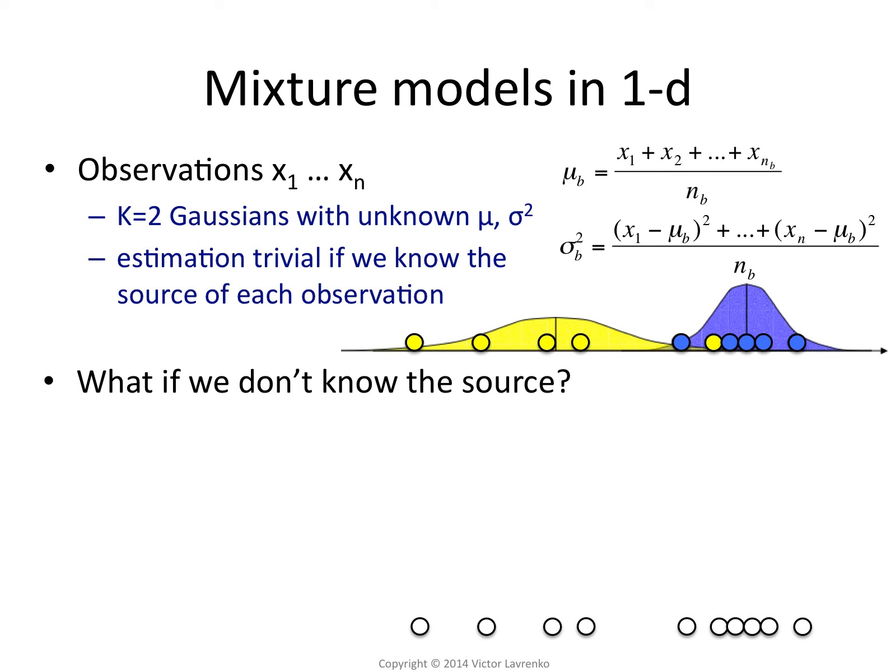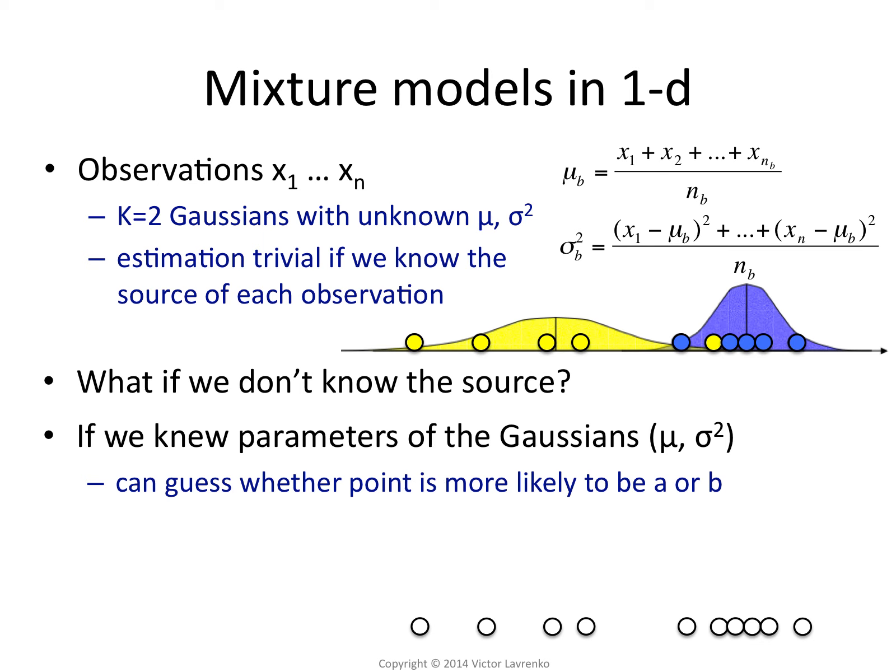Now, you kind of want the labels. You want to know which are blue and which are yellow. Now, if somebody came along and told you the means and the variances, you could make a pretty good guess at what the colors are. So if somebody came along and said, here's the mean for the blue and the variance for the blue and the mean for the yellow and the variance for the yellow...